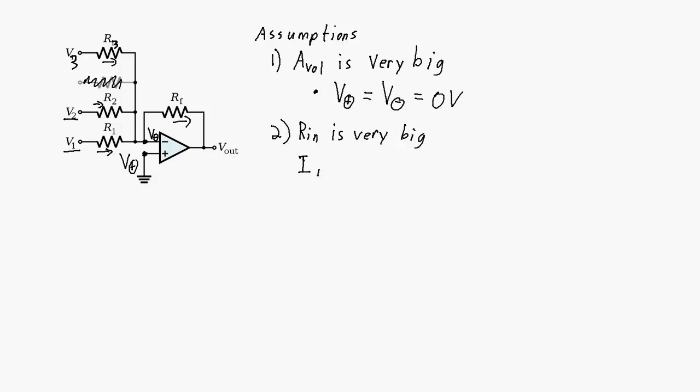So we can say that the current through R1 plus the current through R2 plus the current through R3 is equal to the current through that feedback resistor.